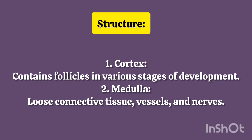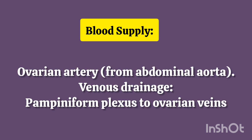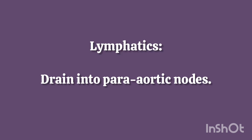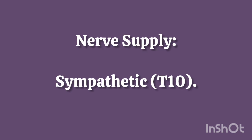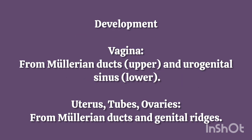2. Medulla – Loose Connective Tissue, Vessels and Nerves. Blood Supply – Ovarian Artery from Abdominal Aorta. Venous Drainage – Pampiniform Plexus to Ovarian Veins. Lymphatics – Drain into Para-aortic Nodes. Nerve Supply – Sympathetic T10. Development – Vagina: from Müllerian Ducts (upper) and Urogenital Sinus (lower). Uterus, Tubes, Ovaries – from Müllerian Ducts and Genital Ridges.